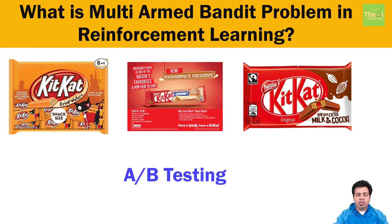One way to find the best ad is A/B testing, where we create separate samples and present them to different customers to see which ad resonates best. The problem with this approach is that it may require spending a lot of time and money exploring each individual ad. Using the multi-armed bandit problem, we can find the best campaign directly in the quickest manner to maximize return on investment. We'll see this in action in upcoming videos.